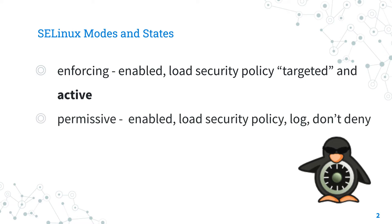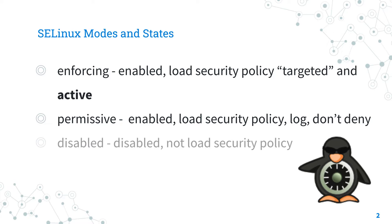The permissive mode is somewhat in the middle. SELinux is enabled and loads the security policy. It labels objects and emits access denied entries in the logs, but it doesn't actually deny any operation. This mode is useful in development and debugging. The disable mode completely disables the SELinux system. This option is discouraged but might be useful when you are very desperate.